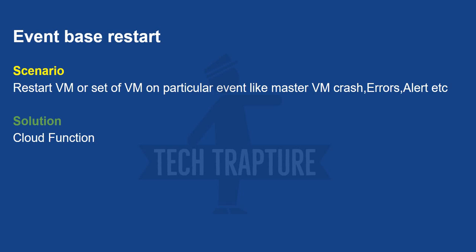The solution for event-based restart uses Cloud Functions. There aren't many inherent limitations since we're picking up an event and restarting the VM — you can even restart multiple VMs. The main limitation is design complexity: you capture logs, find the error, create an alert, trigger the Cloud Function, and then the function restarts the VM. You also need knowledge of a programming language such as Java or Python.